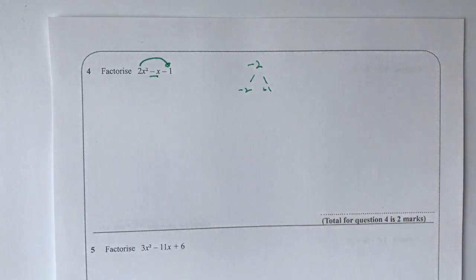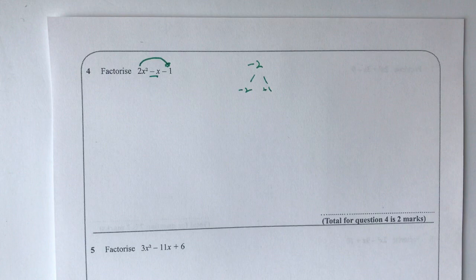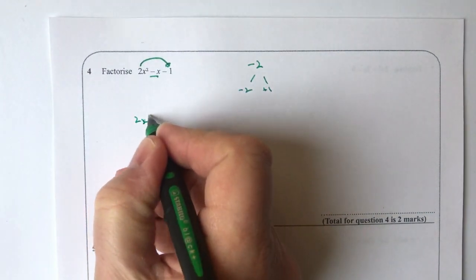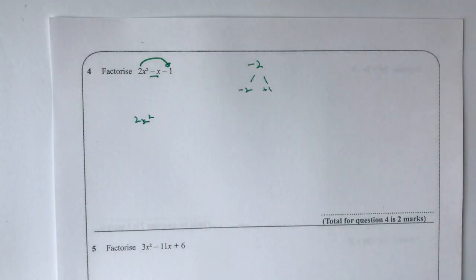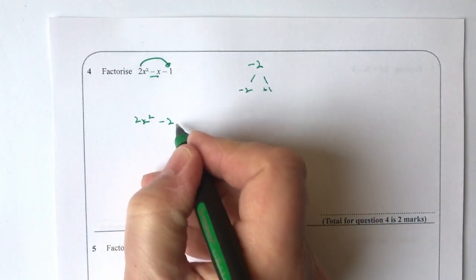Okay, now it's a case of rewriting this. The way I'm going to rewrite it is I'm going to write 2x squared, so that bit doesn't change, and then I'm going to write minus 2x plus 1x.